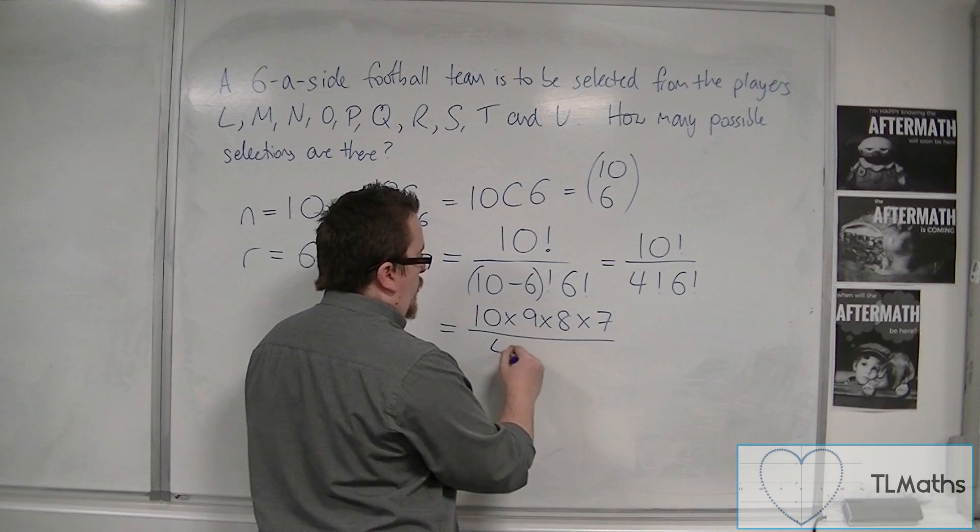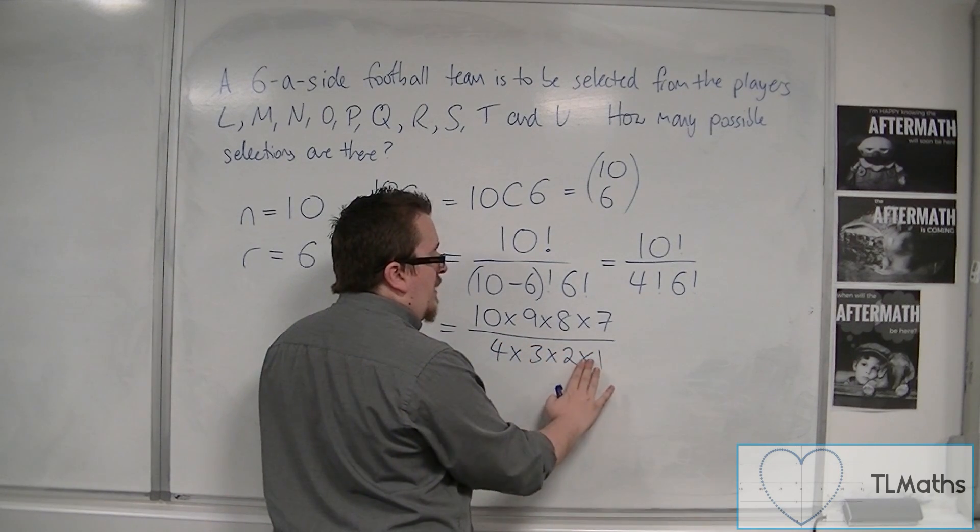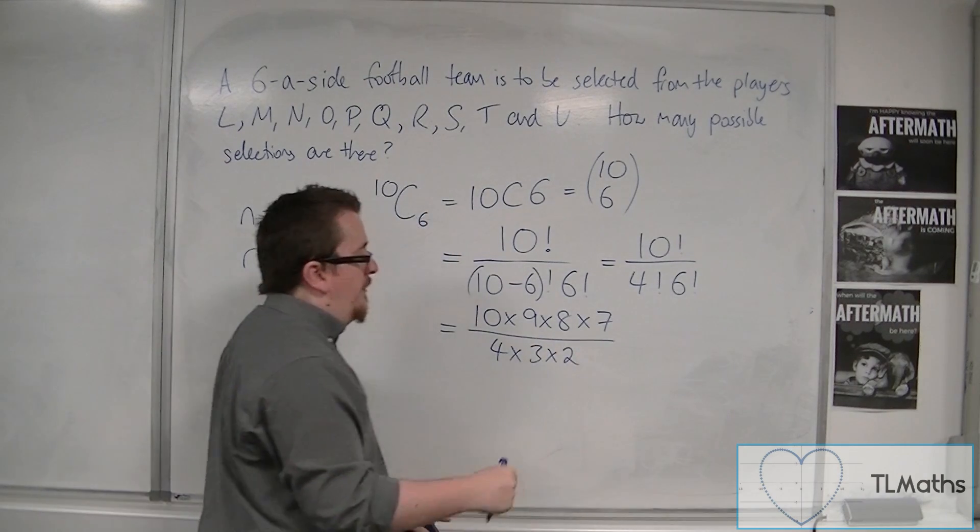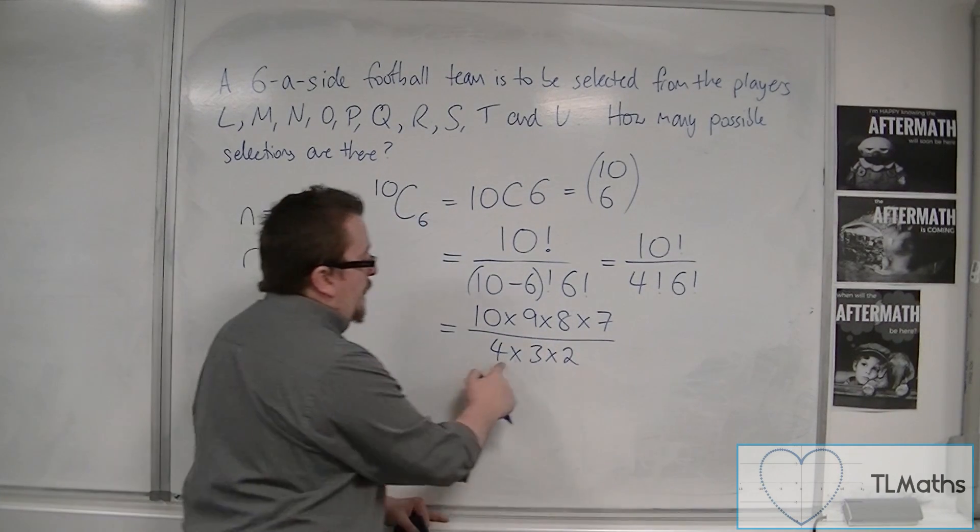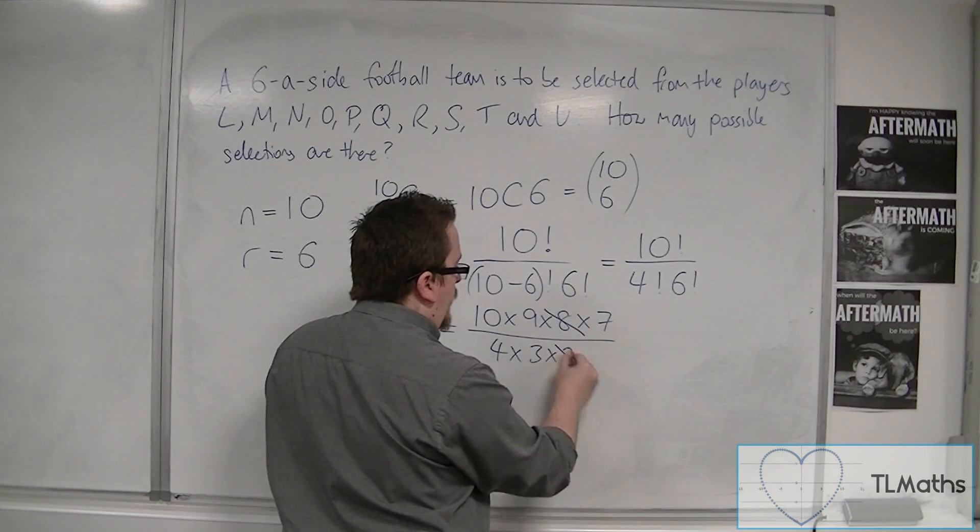And on the bottom I've got 4 times 3 times 2 times 1. Well, multiplying by 1 isn't going to change anything, so I can get rid of that. 4 times 2 is 8, and I've got an 8 there, so that can cancel with the 4 and the 2.